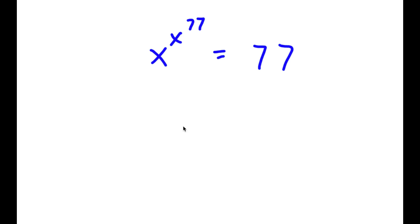In this problem, I have x to the power of x to the power of 77 is equal to 77. I want to find the value of x.